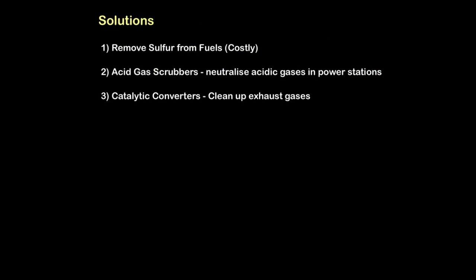There are some solutions to this, though. We can remove sulfur from fuels, but that costs quite a lot of money. We can use acid gas scrubbers. These are devices made from calcium carbonate, which are placed on top of power station chimneys. And if you remember, calcium carbonate is a base, so as the acidic gases rise, they get neutralized by calcium carbonate. That question comes up a lot in exams, so be aware that we can use calcium carbonate to neutralize acidic gases in power stations.